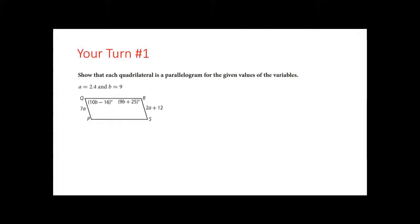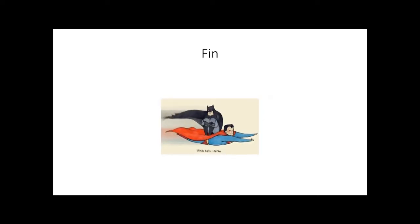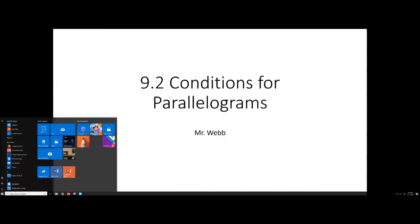Your turn, number one: show that this quadrilateral is a parallelogram. Know where you're substituting in your values to double check. Be aware these two adjacent angles are not necessarily congruent — they are supplementary, so they should add up to 180. Your turn, number two: show that each quadrilateral is a parallelogram — same process, know where to substitute your variables and double check. These involve diagonals — that's the only hint I'll give you. Have a great day, and let me know if you have any questions.